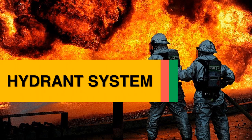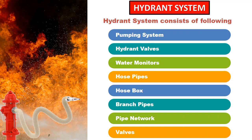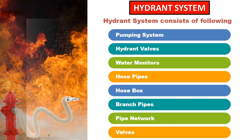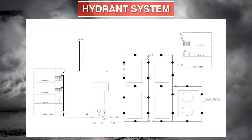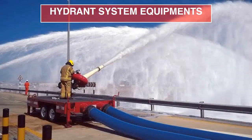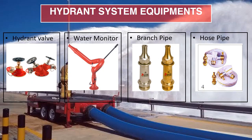Moving to the next module: the hydrant system. The main components of the hydrant system are the pumping system, hydrant valves, water monitors, hose pipes, hose box, branch pipes, pipe network, and valves. The hydrant system is the backbone of the firefighting system. It is provided throughout the entire plant area including the upper floors of multi-storey buildings, and it is a manually operated system.